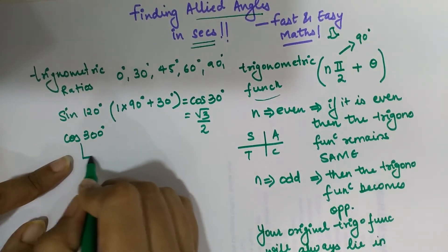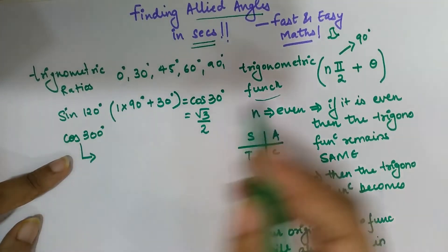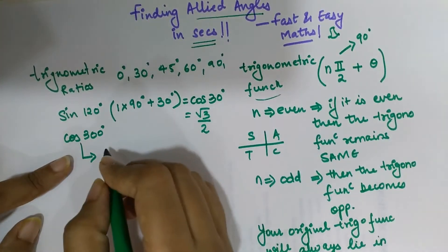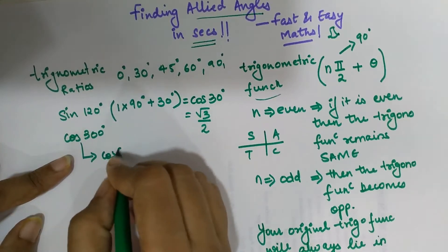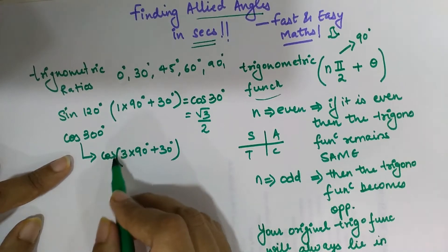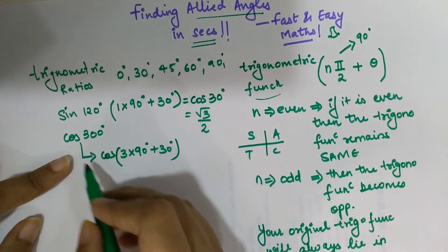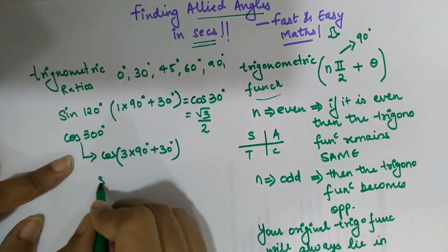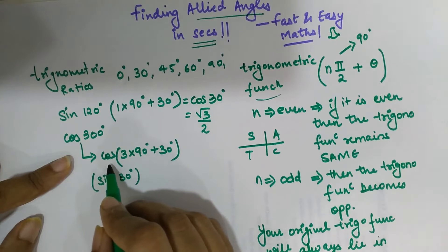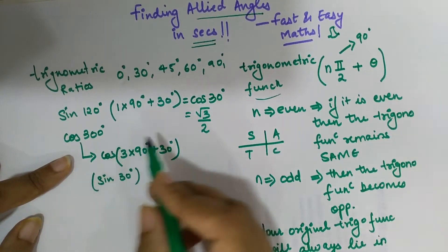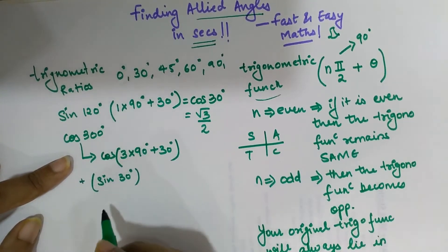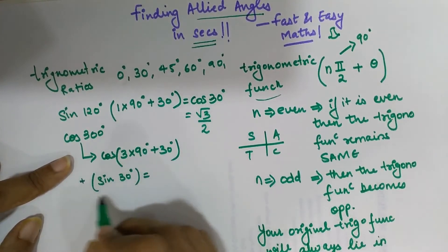Now let's find cos(300°). I can write 300° as 3 × 90° + 30°. Here n is 3, which is odd, so we take the opposite of cosine, which is sine. So we need sine(30°). The cos function lies in the (3+1) = 4th quadrant, and in the 4th quadrant cosine is positive, so the answer is positive. sine(30°) = 1/2, so cos(300°) = 1/2.